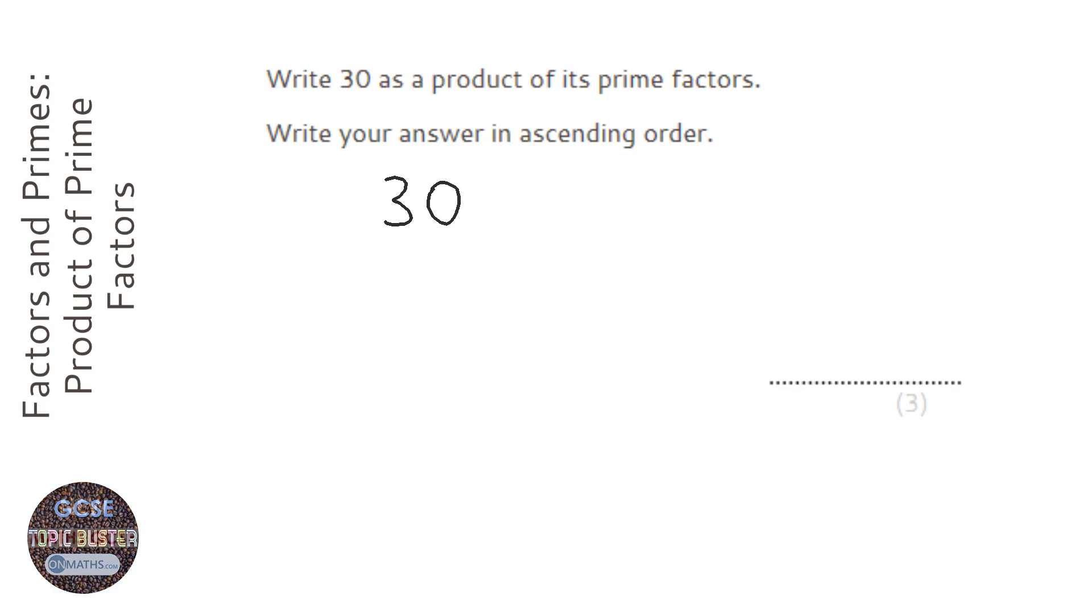So I'm going to start with 30, and I'm going to figure out what two numbers multiply together to make 30. Now, for all even numbers, I always pick 2, but you don't need to. I know 2 times 15 is 30.